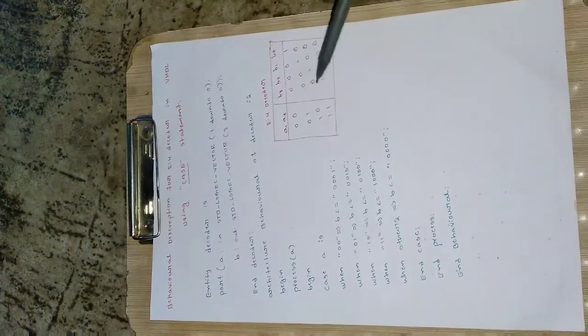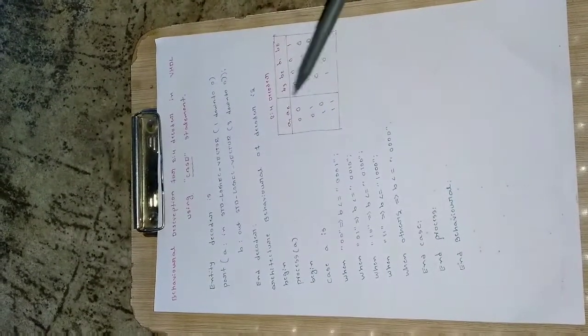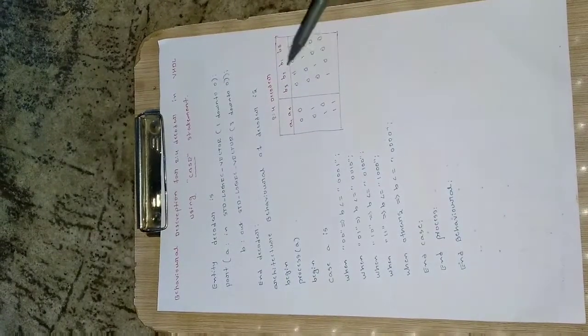So like this in a simple way the 2 to 4 decoder is working. So how I can implement it with the help of this Xilinx ModelSim code or behavioral code we will see.